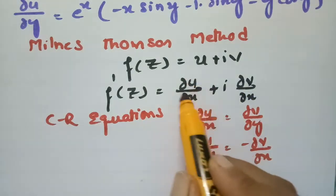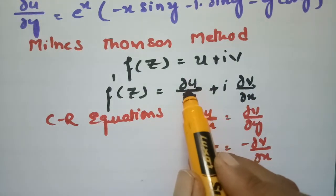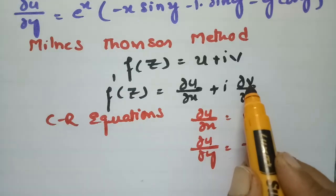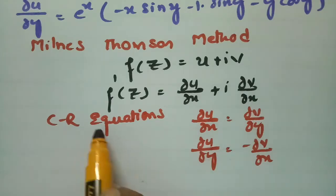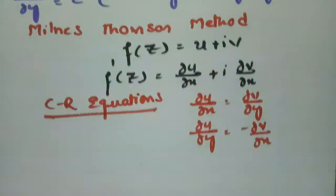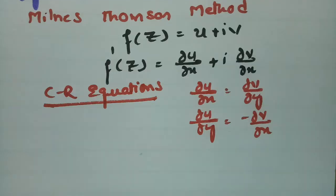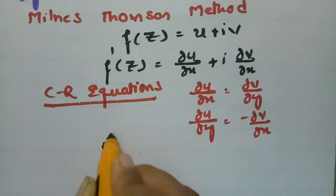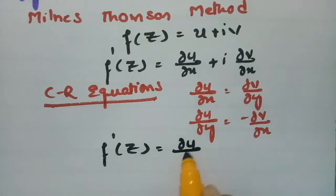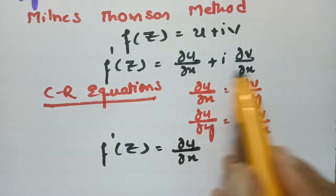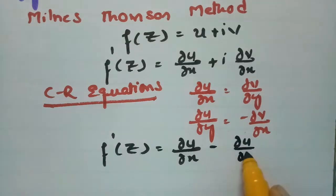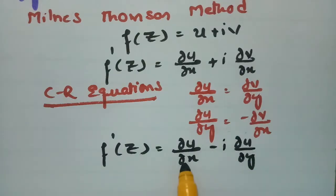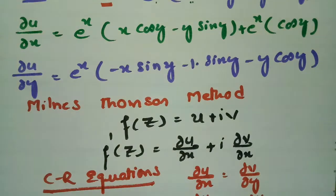We have only the real part given in the question, so we have to transform the imaginary part into the real part. In place of ∂v/∂x I am writing minus ∂u/∂y using the CR equations. So f'(z) = ∂u/∂x − i·(∂u/∂y). Now I am going to substitute the ∂u/∂x value and ∂u/∂y value from equations 1 and 2.